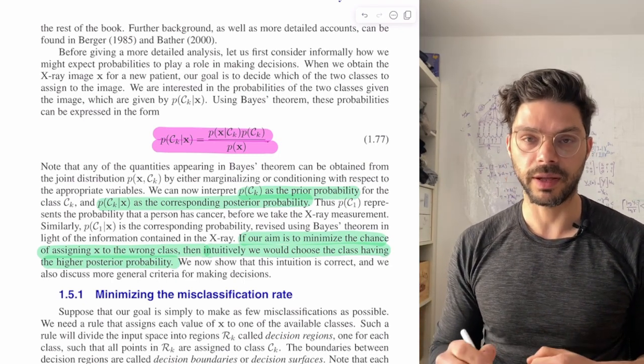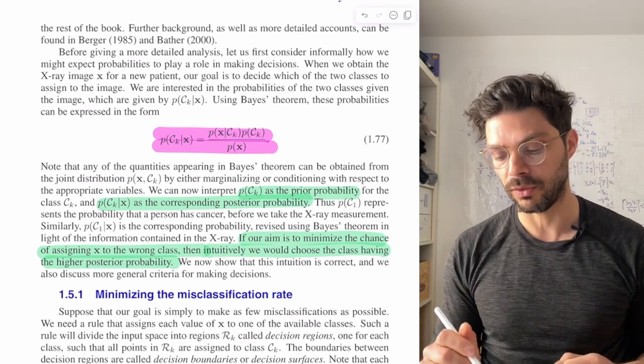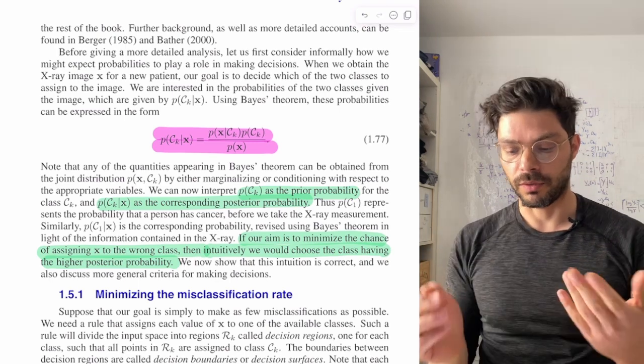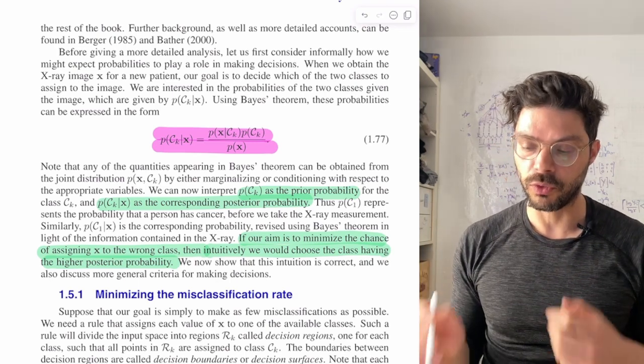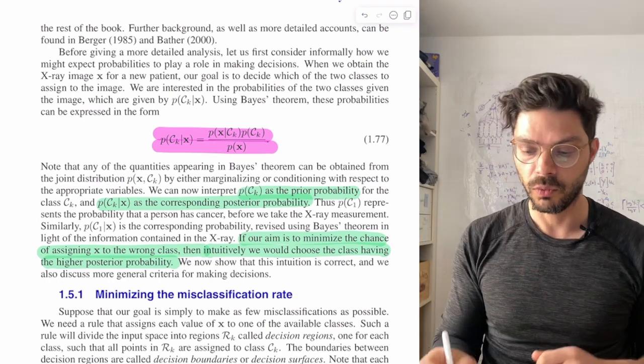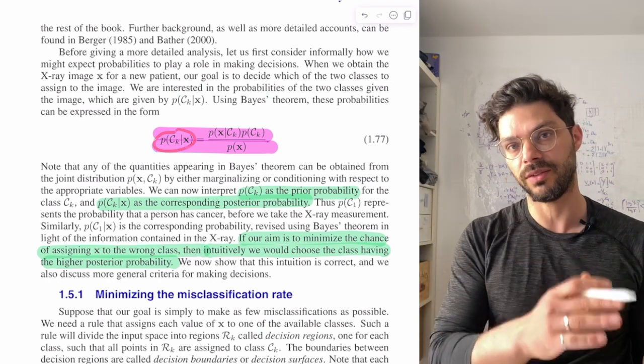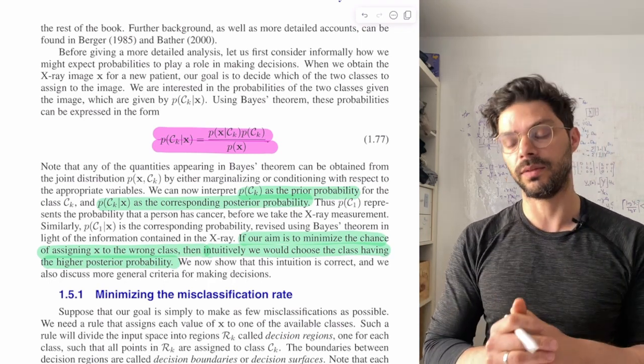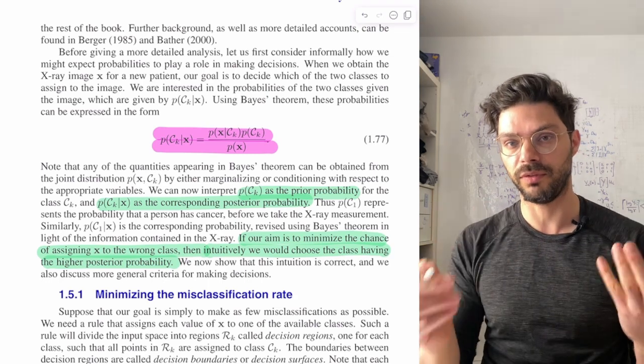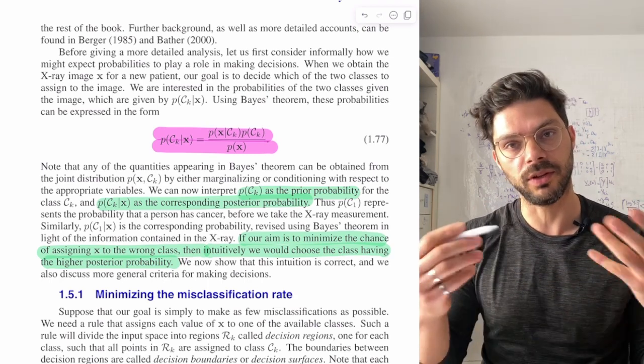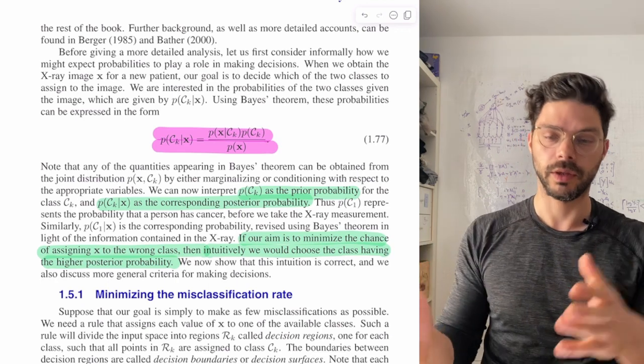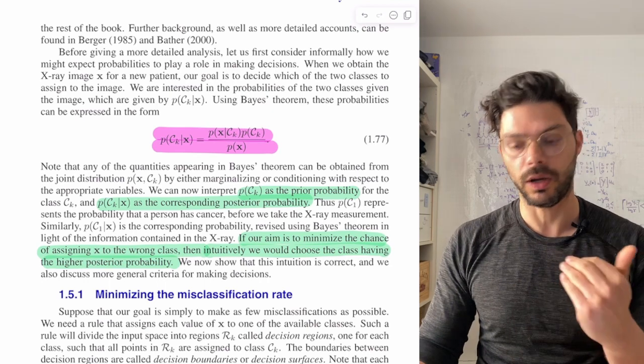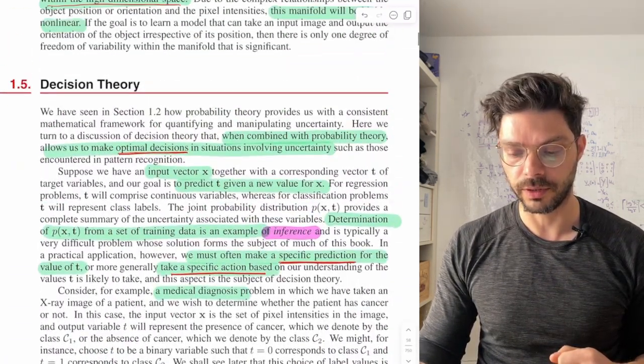And now, for example, back to the cancer case, if our aim is going to be to minimize the chance of assigning the person the wrong category, then it seems intuitive that we would choose the class. So we're making a decision, what class are they in? Well, we would compute the probability of cancer given X compared to probability of no cancer given X, and then assign that data point to the class that has a higher probability. And that's the intuitive decision. But with decision theory, it allows us to show that, in fact, in certain situations, that is the correct thing to be doing. So that's basically what all this introductory section was about.